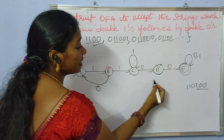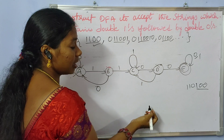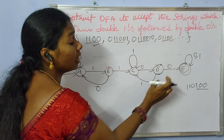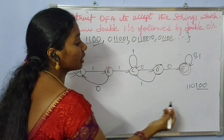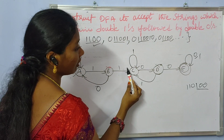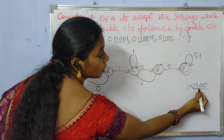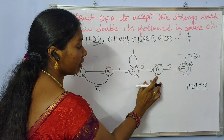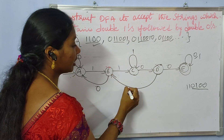Suppose you connect 1 from C back to C — it would accept the string 100, so 100 gets accepted. One zero zero would be accepted — that string would be accepted, which is not required. That connection is not needed for us.